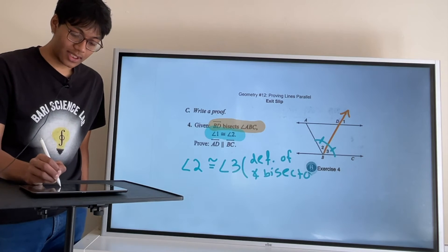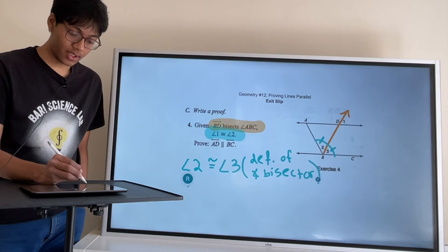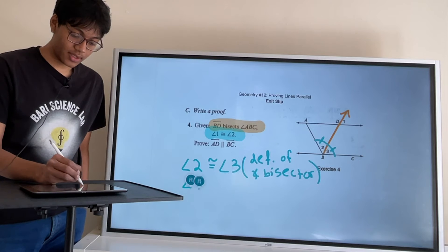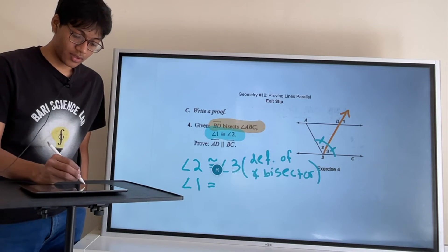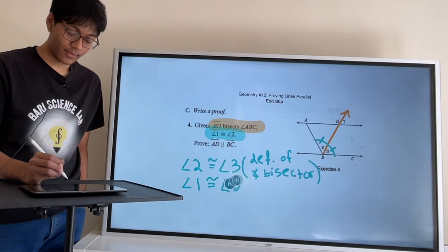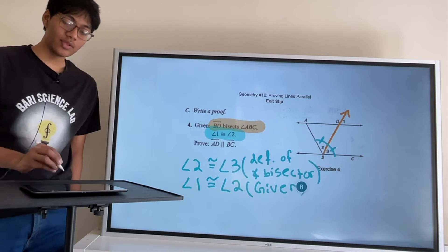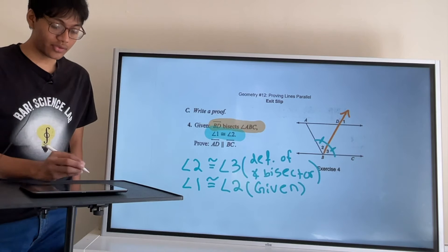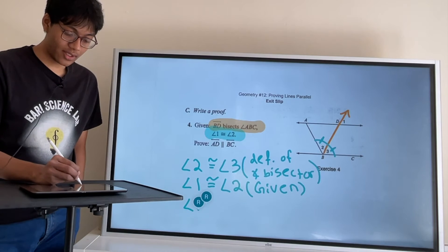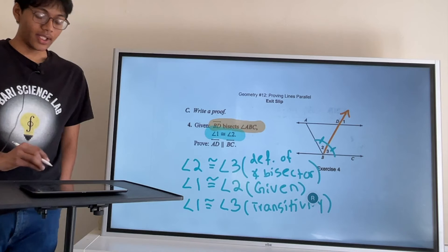Now, they also give us the information that angle 1 is congruent to angle 2, and that's a given, right? So if angle 1 is congruent to angle 2 and angle 2 is congruent to angle 3, well, then by the transitivity property, angle 1 is congruent to angle 3. Okay, great.